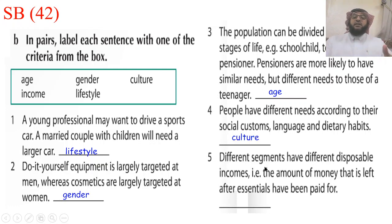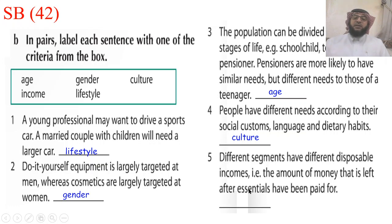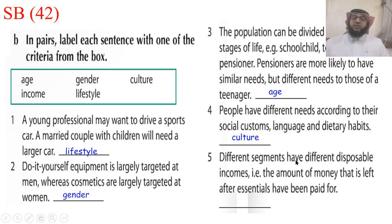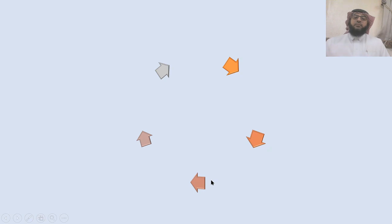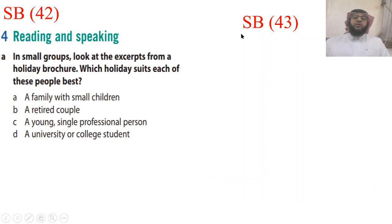Number five: Different segments have different disposable incomes — القطاعات المختلفة — for example, the amount of money that is left after essentials have been paid for. The answer is income. We can now move to page number forty three.